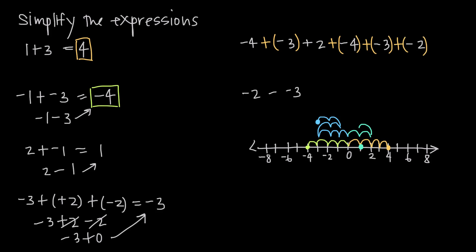Now we can add all the negative numbers together: negative 4 plus negative 3 is negative 7, plus negative 4 is negative 11, plus negative 3 is negative 14, plus negative 2 is negative 16. The only positive number is the plus 2, so we have negative 16 plus 2. On the number line, we start at the origin, move 16 units to the left, then come back 2 units to the right, giving us negative 14.